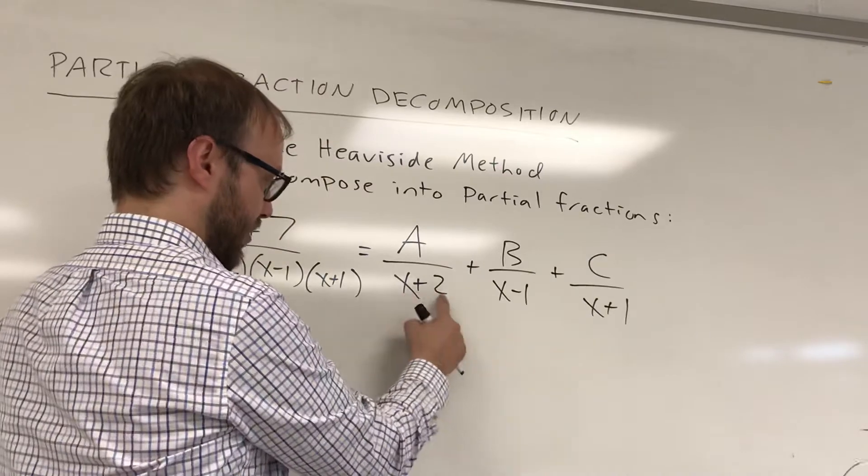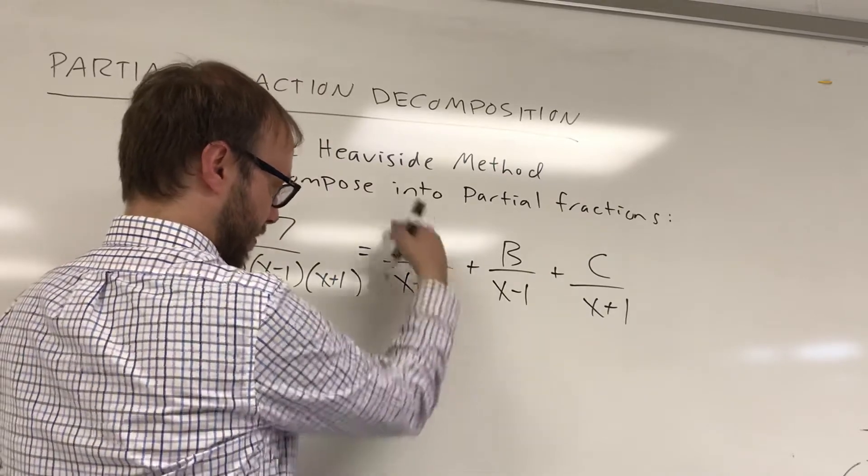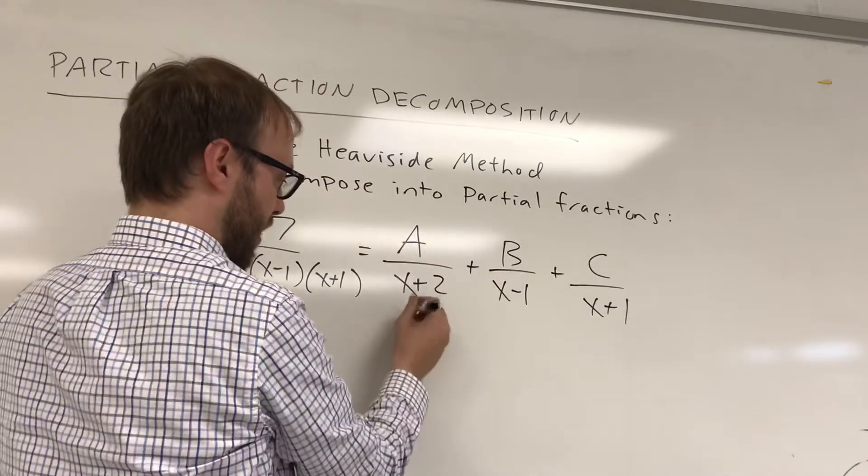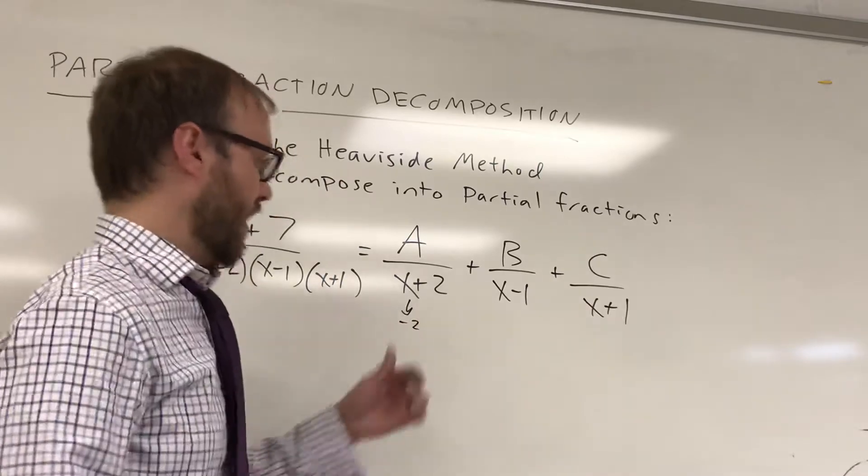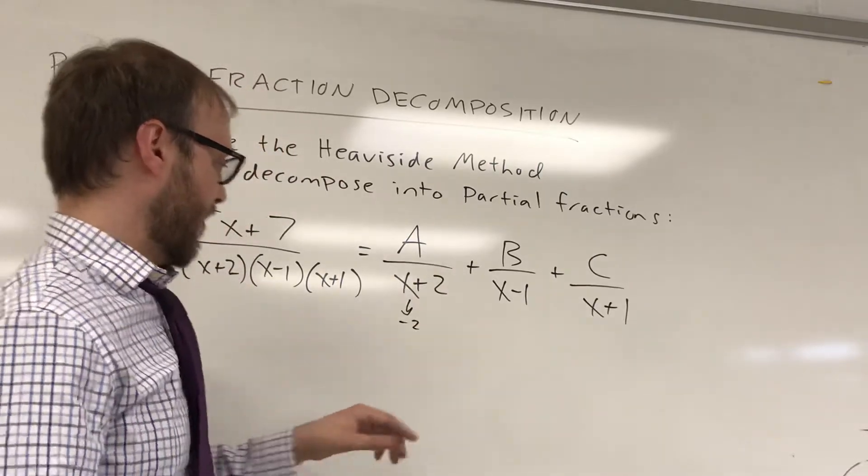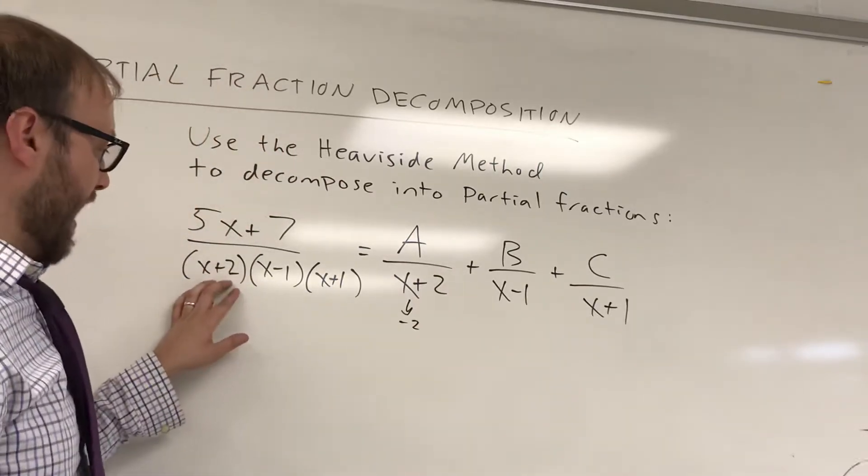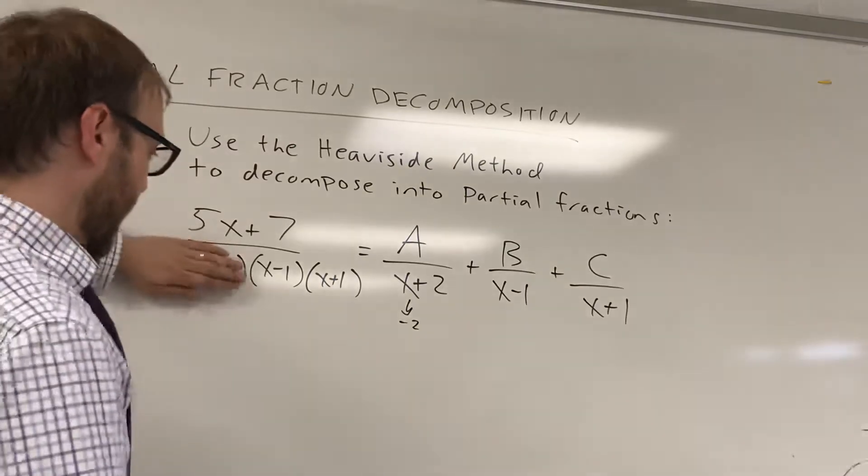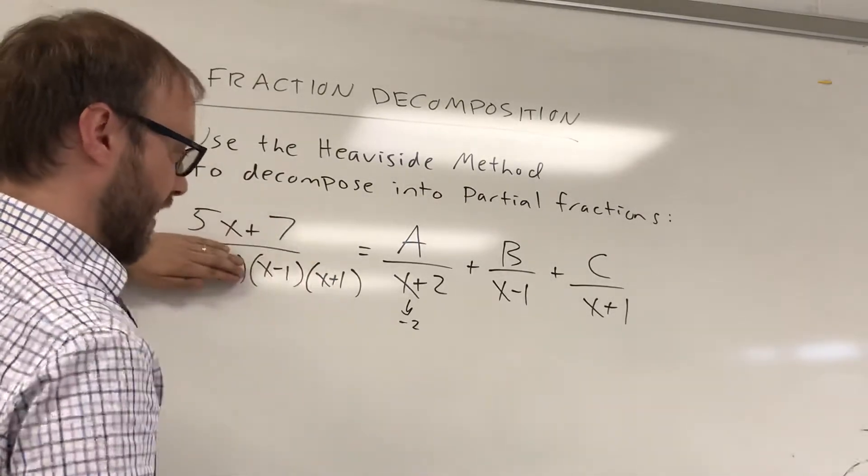So remember, the idea is you find the value that would make your denominator that you're trying to find the constant for zero. So x would be negative 2. That's what would make this denominator zero. So I can't put a negative 2 in here. I cover up that term and you just substitute negative 2 in for everything else.